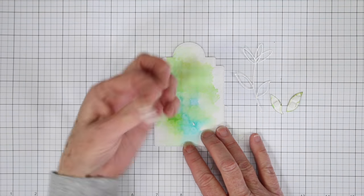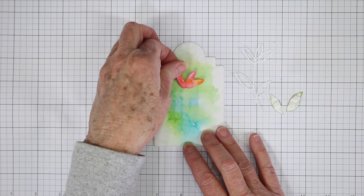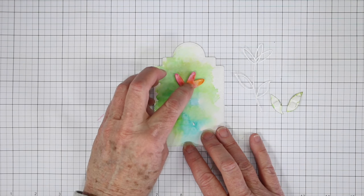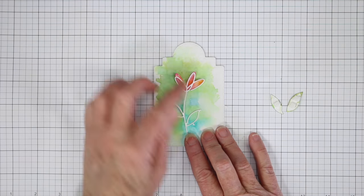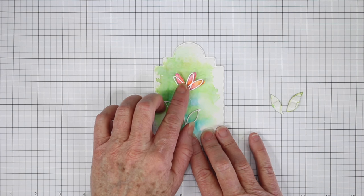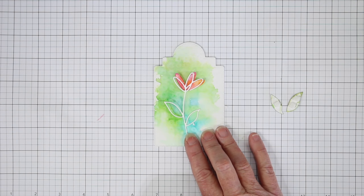To put this together, I've put a little bit of foam adhesive on the back of the blossoms and the leaves, and I'll go ahead and stack that onto the card, and I'm going to be offsetting my frame on top, and I have a little bit of my glue pen glue on the back side of that frame.